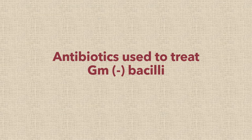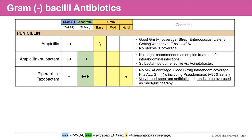Now let's talk about the antibiotics used to treat these gram-negative bacilli, starting with the penicillin group. In this group we have ampicillin, ampicillin-sulbactam, and piperacillin-tazobactam. The sulbactam and the tazobactam are enzyme inhibitors, and these inhibitors allow the spectrum of these two antibiotics to be expanded into gram-negative territory. Ampicillin-sulbactam has both easy and moderate-to-hit gram-negative coverage, and piperacillin-tazobactam has easy, moderate, and hard-to-hit coverage, including pseudomonal coverage.